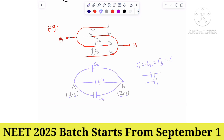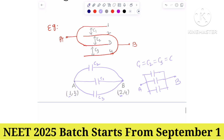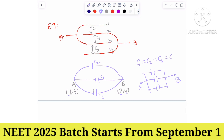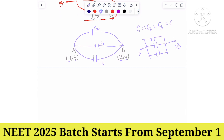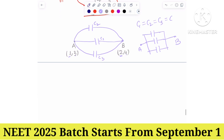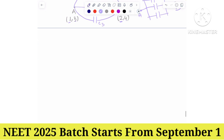Effective capacitance is very easy to find now. All three are in parallel across A and B, so the effective capacitance is 3C.